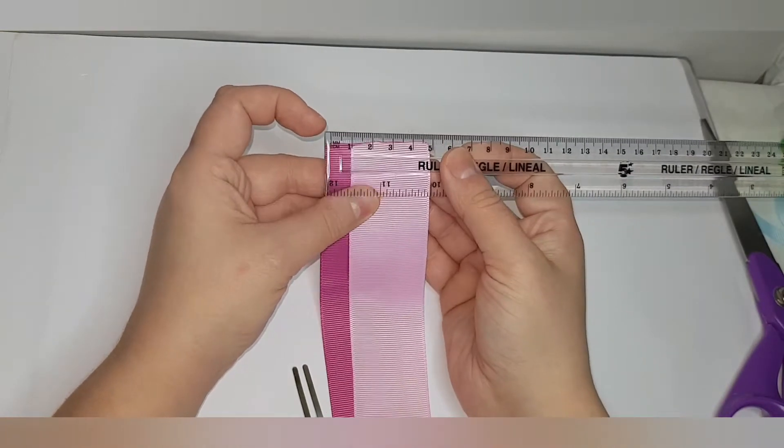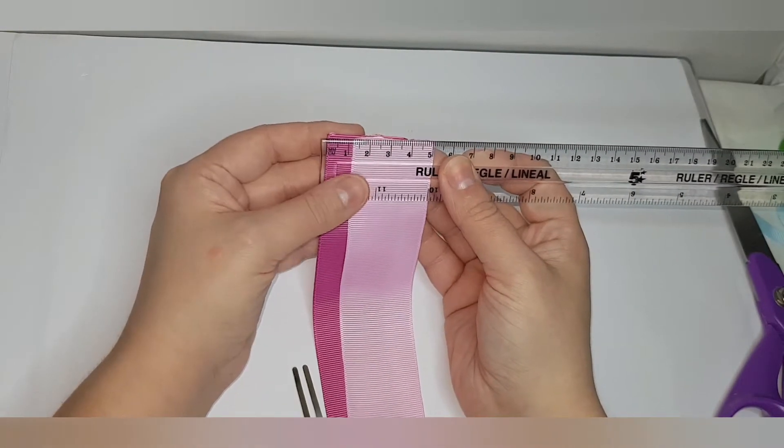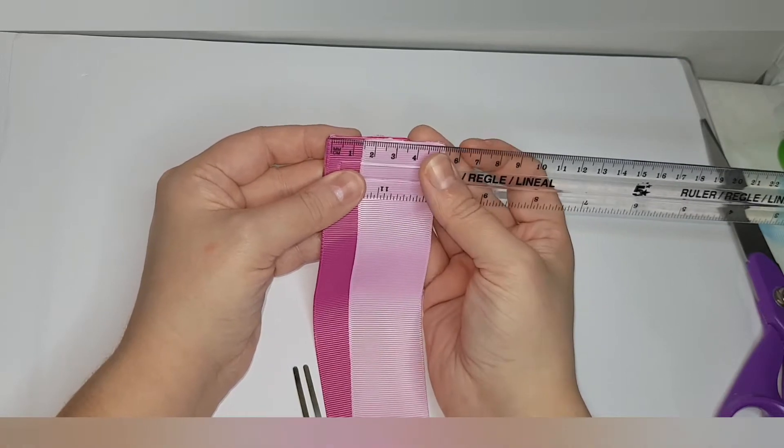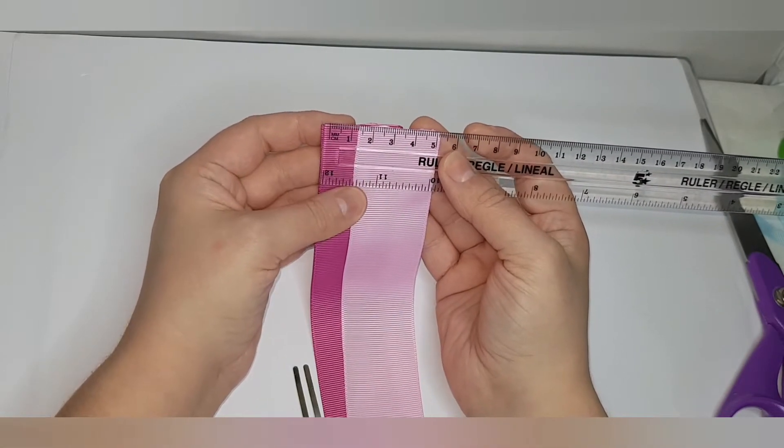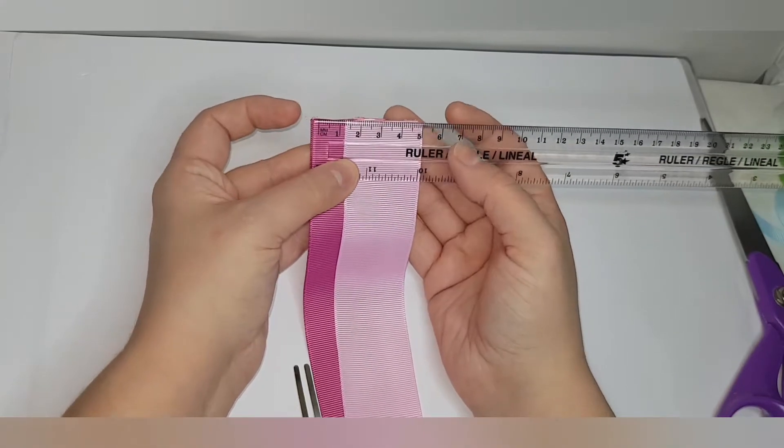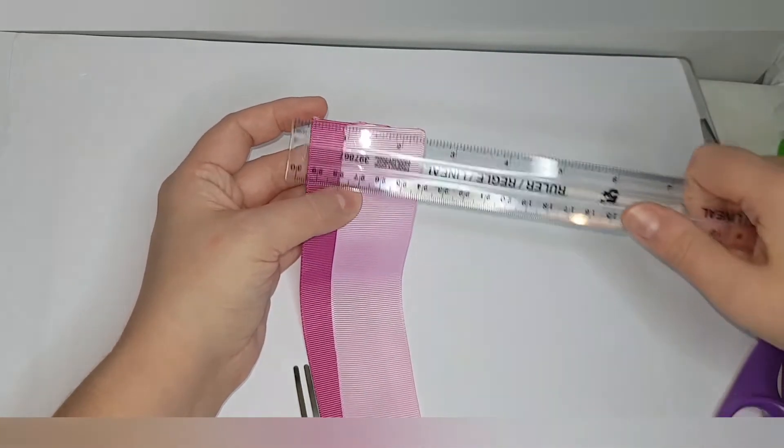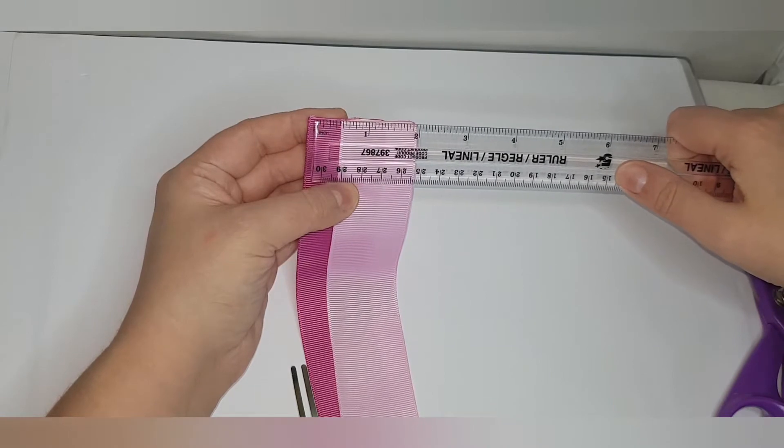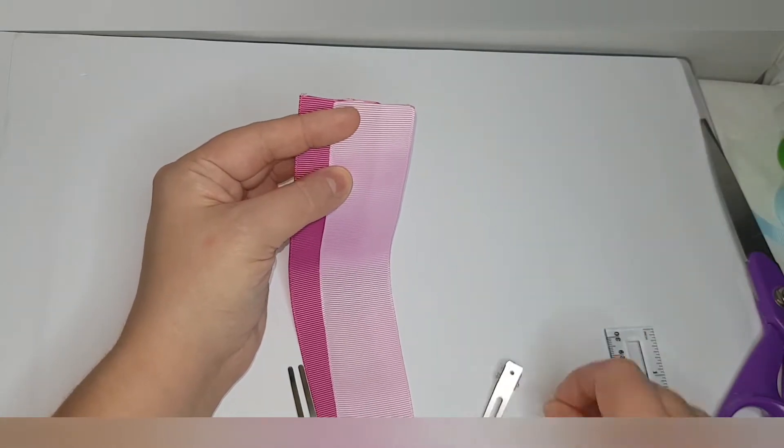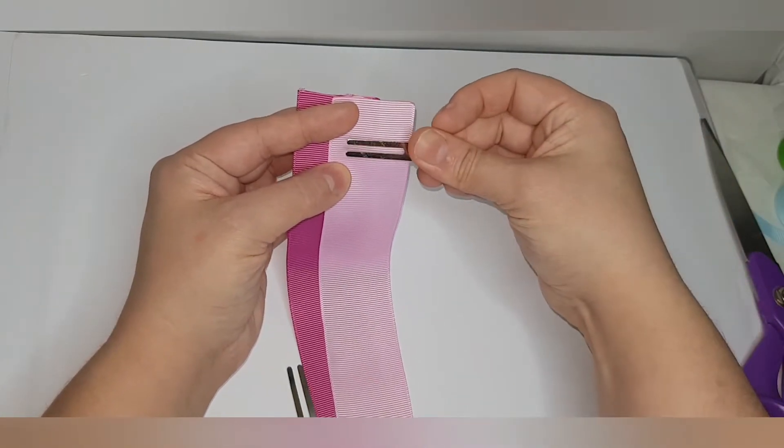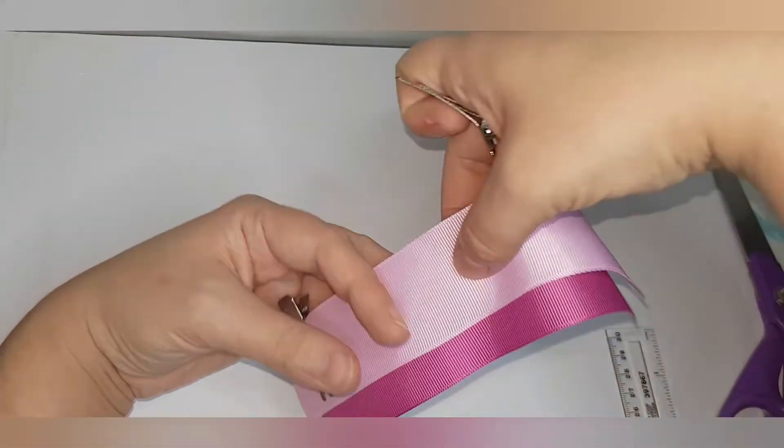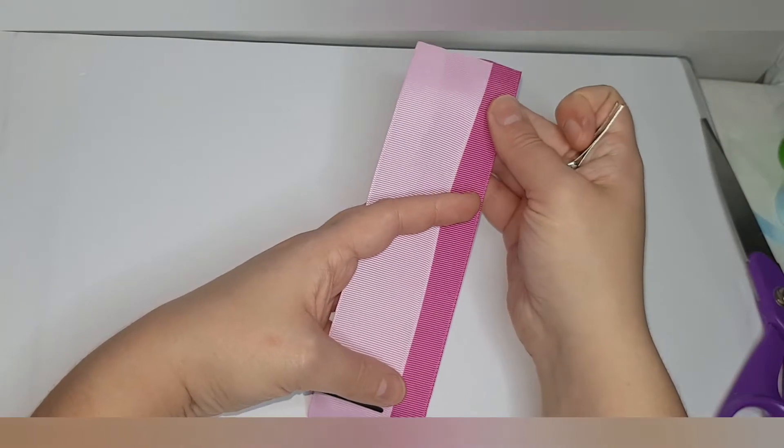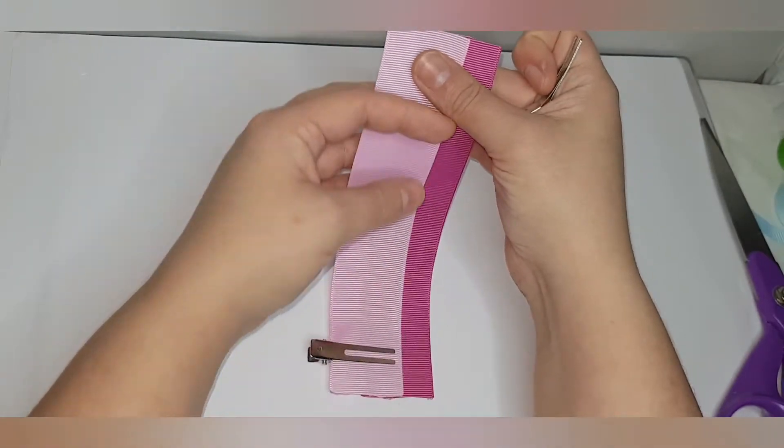You want about 1.5 centimeters either side so you get about five centimeters or two inches long. Again, any alligator clips or anything that will hold the ribbon in place as we're folding everything and getting the stitches in so it doesn't slip about.